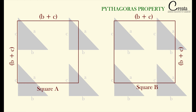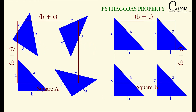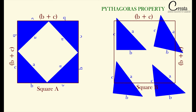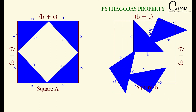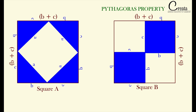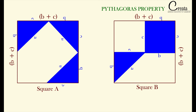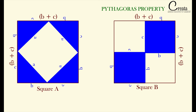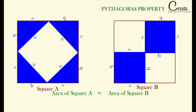Now let's place four triangles in one square and the remaining four triangles in the other square. The triangles are fixed inside the squares. These squares are identical and the inserted triangles are also identical, so we can say the area of square A is equal to the area of square B — both are identical squares with side B plus C.